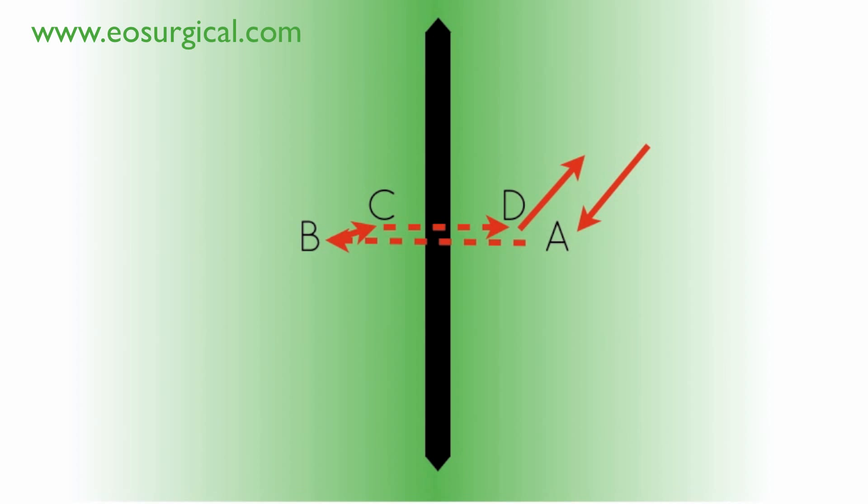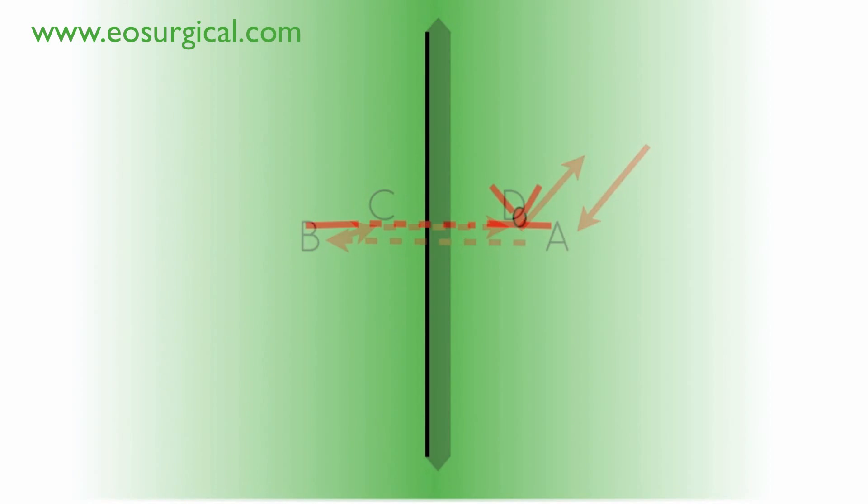You then tie A and D together and it will give you an appearance much as shown here. There are two areas of suture which are showing.